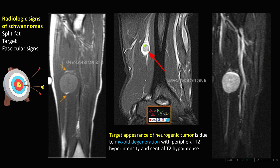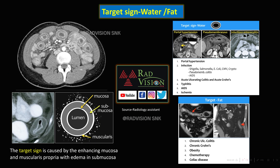Next: this is a common target sign seen in peripheral nerve sheath tumors such as schwannomas. The target sign is due to myxoid degeneration, where you can see a central T2 hypointense area surrounded by a peripheral T2 hyperintense rim. Additionally, split fat sign and fascicular sign are commonly seen in schwannomas.